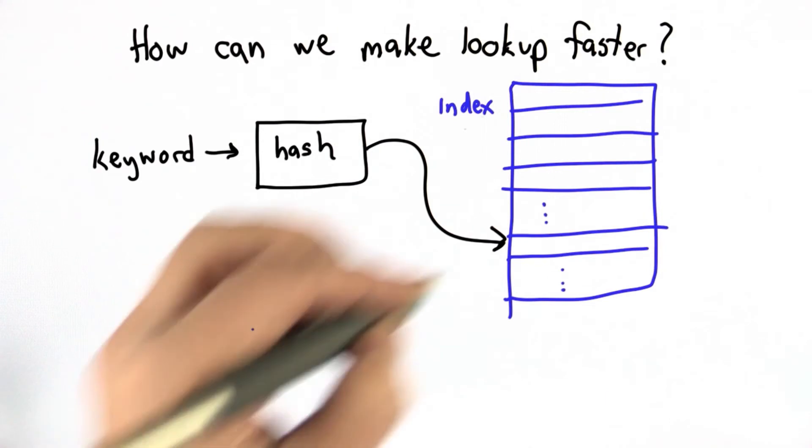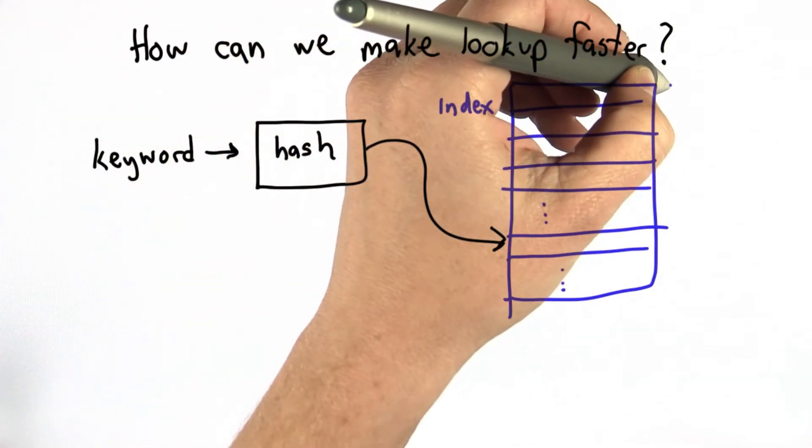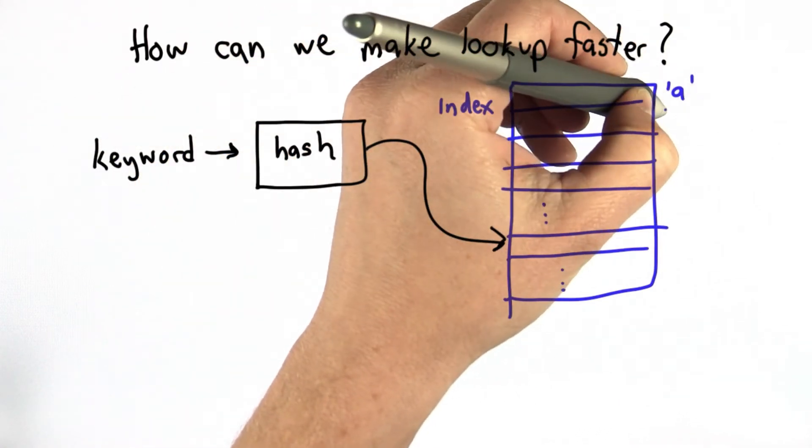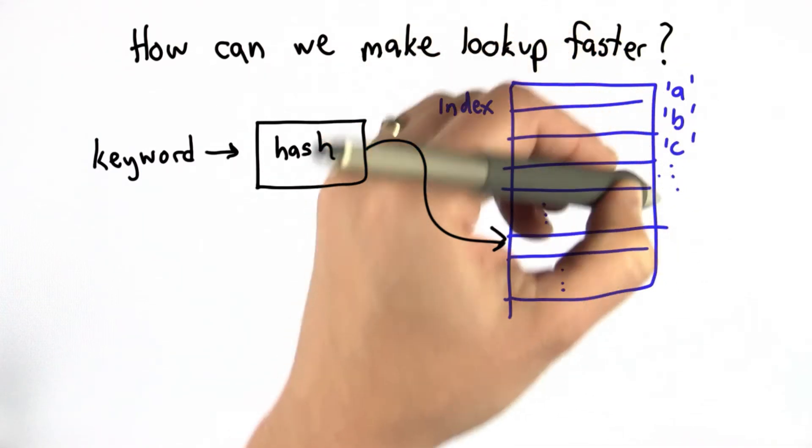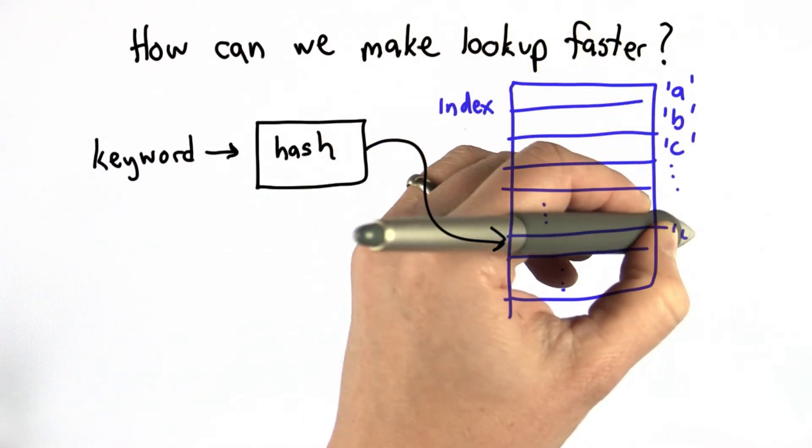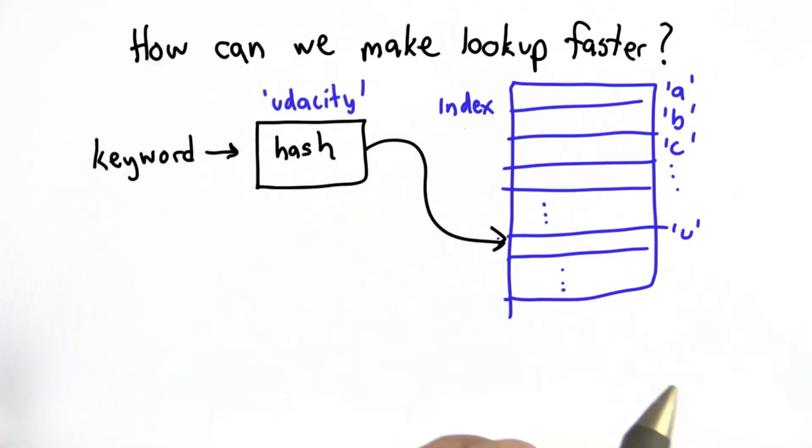And we're going to have, for each entry in the index, based on the first letter, we'll put all the entries that start with that first letter in the same place. So if we're looking for a keyword that starts with U, that hash would tell us to look in the place where all the words that start with U are.